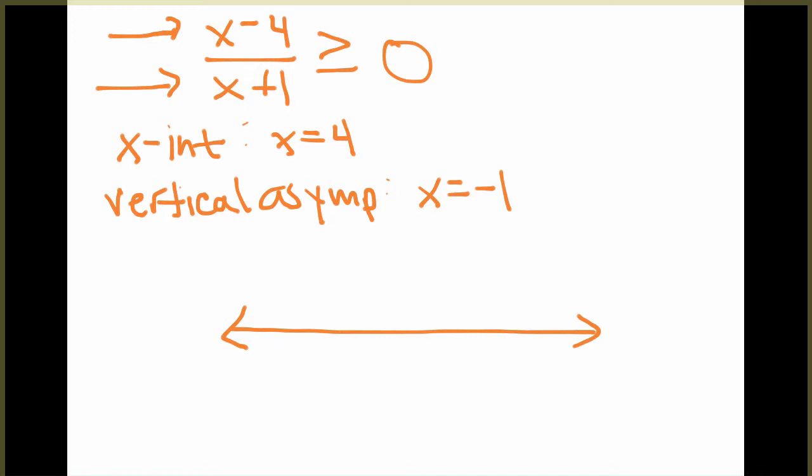Those are the only two spots where the function will either equal 0 or jump over the x-axis or go from positive to negative because of the asymptote. We know an x-intercept at 4 means our graph is actually going to go through that value at 4. But at negative 1, it's a vertical asymptote, so our graph is never actually going to hit negative 1.